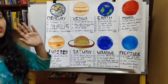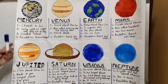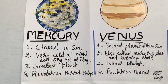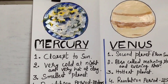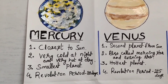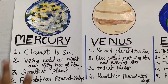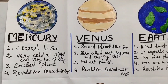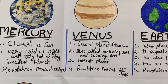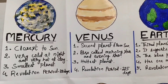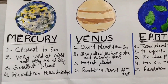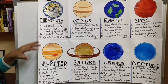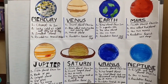The first planet, which is the closest to the sun — do you know what that is? Mercury. Mercury is the closest planet to the sun. It is very cold at night and very hot during the day. It is the smallest planet among all. Its revolution period is 88 days, which means the time it takes to revolve around the sun. So it takes 88 days to revolve around the sun.